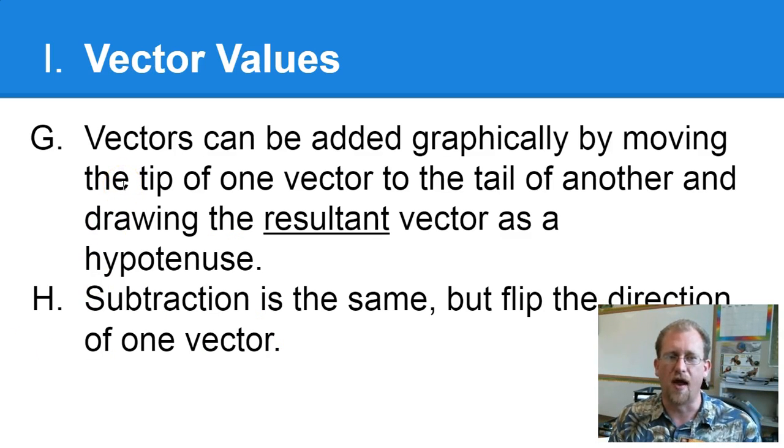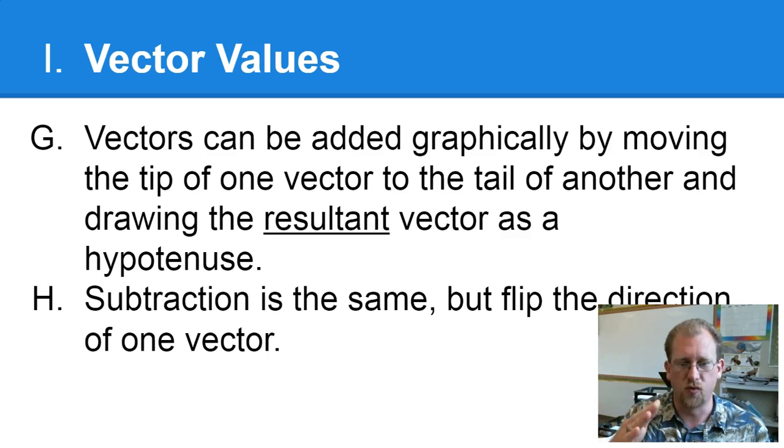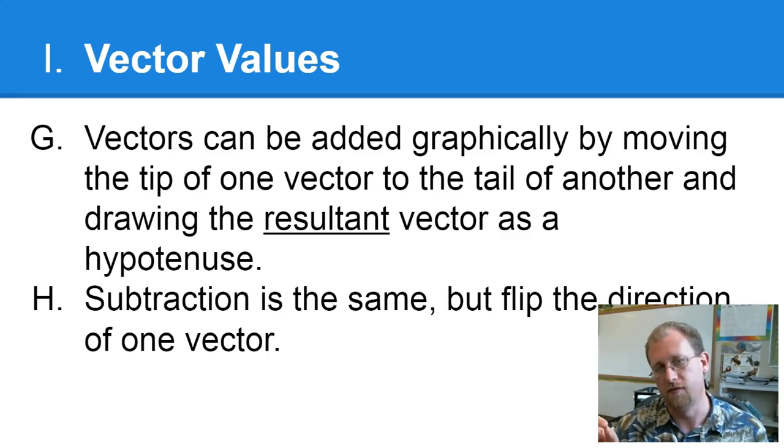So let me give you that in words. Vectors can be added graphically by moving the tip of one vector to the tail of another and drawing the resultant vector as the hypotenuse. If there's two, you've arranged one and then the other and then the line that connects them makes a triangle. In this case I just showed you we actually have three, but it's the same idea. Drawing from the beginning to the end of the line of arrows will give you the same exact vector. And that's the sum of vectors. So you can add vectors graphically this way.